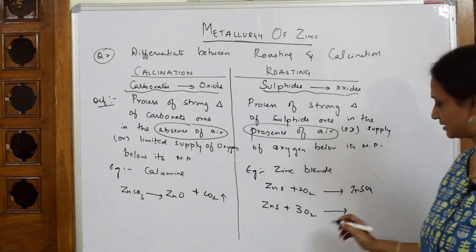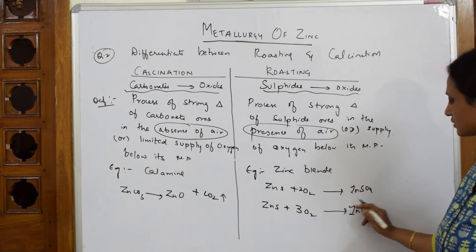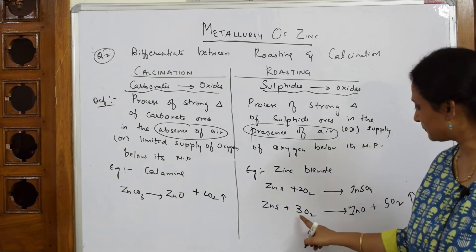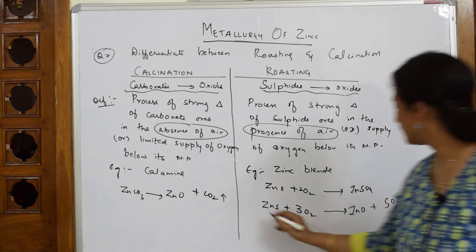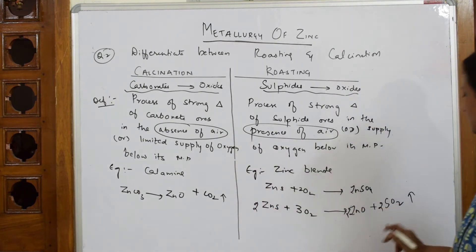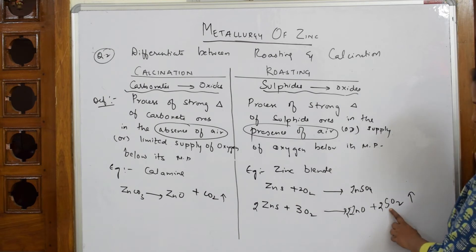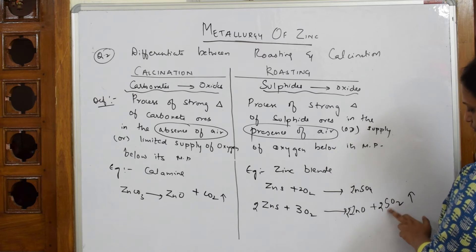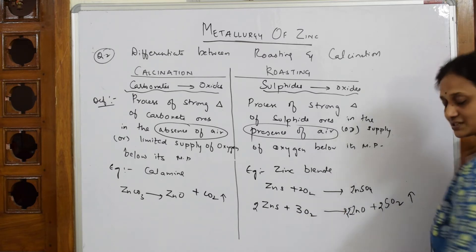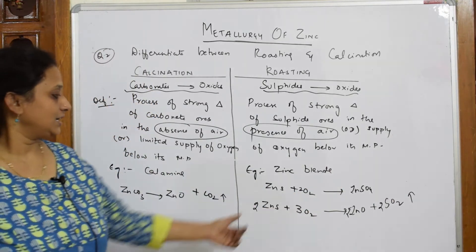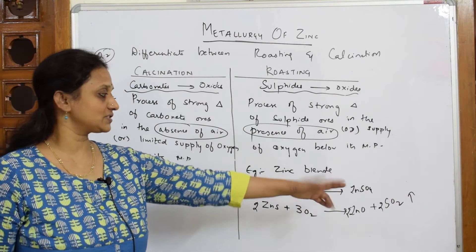When I further heat it at a higher state, this becomes zinc oxide, and the leftover is sulfur dioxide (SO₂). Balancing: 2ZnS + 3O₂ → 2ZnO + 2SO₂. Sulfur is 2, zinc is 2, oxygen is 2+4=6 on the right and 3×2=6 on the left. Balanced. So with 2 moles of O₂ you get zinc sulfide; with 3 moles of O₂ you get zinc oxide and sulfur dioxide. This is roasting.